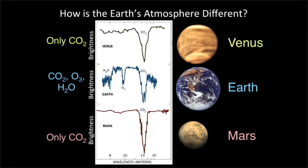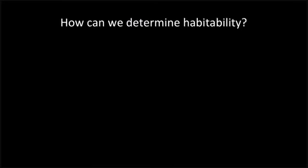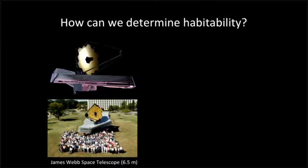We need new instruments in order to get these data for other planets. One of those missions is the James Webb Space Telescope, which is being built right now and should be launched by the end of the decade. This is a scale model showing only a small fraction of the people who've helped with this mission. James Webb will be in space with a big shield on the bottom to keep it cold, because it's going to do a very good job looking at the atmospheres of planets. James Webb will also teach us about other areas of astrophysics.